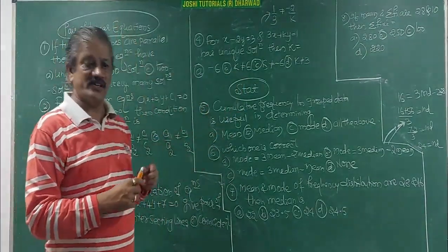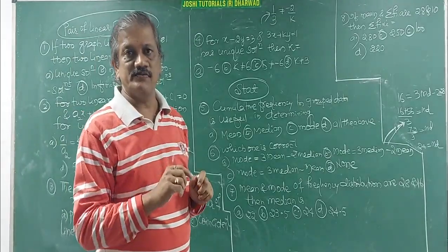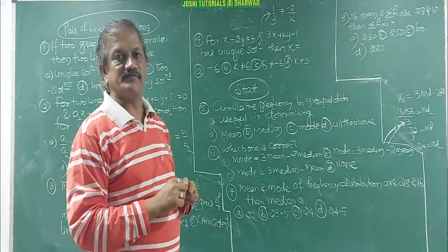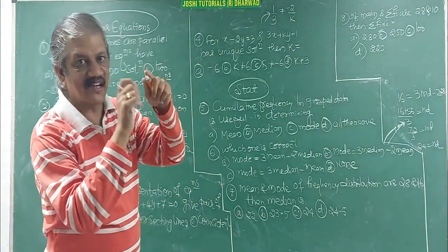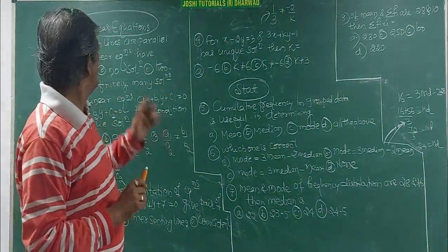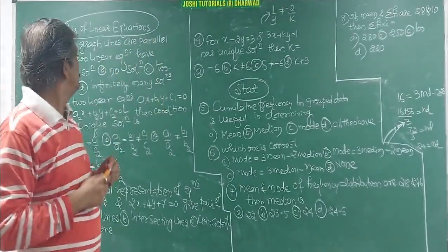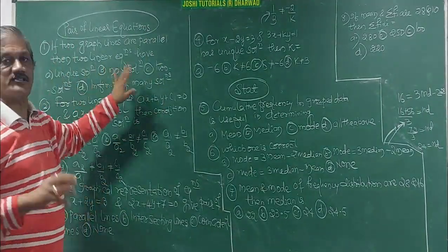In pair of linear equations, a1 by a2 is not equal to b1 by b2 gives unique solution, means they intersect. If the graph lines are parallel, then they have got no solutions.